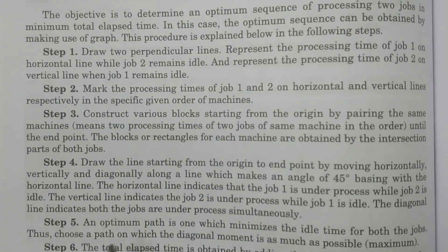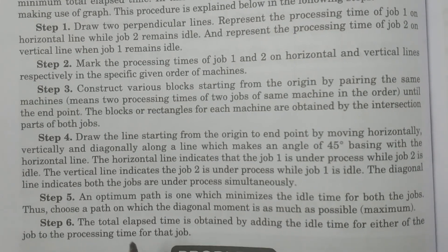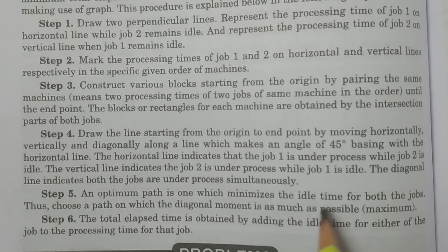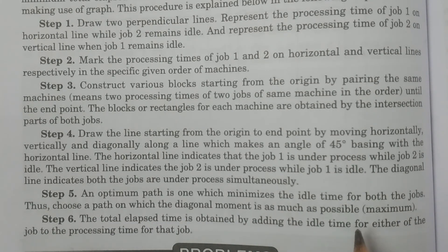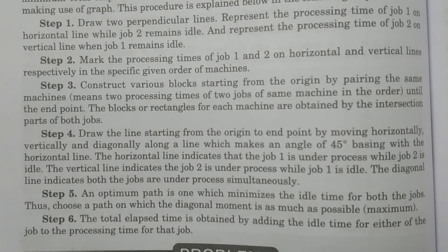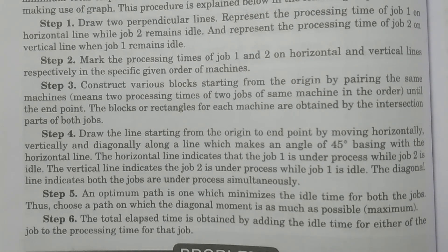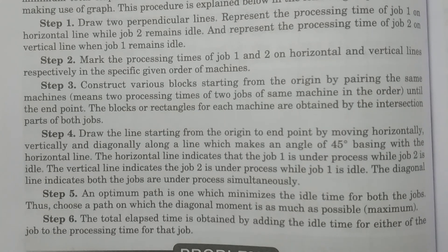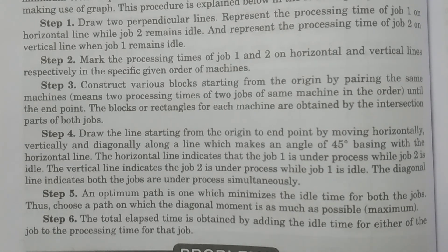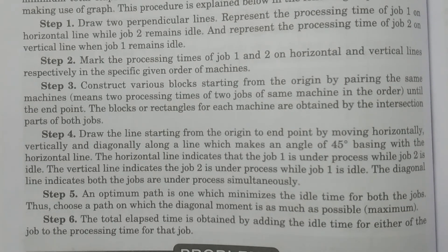Step five: the optimum path is one which minimizes the idle time for both jobs — choose a path, called the critical or optimum path, on which the diagonal movement is as much as possible, that is maximum. This optimum path gives the total elapsed time. Step six: the total elapsed time is obtained by adding the idle time of either job to the processing time of that job — processing time plus idle time of the respective job gives the total elapsed time.